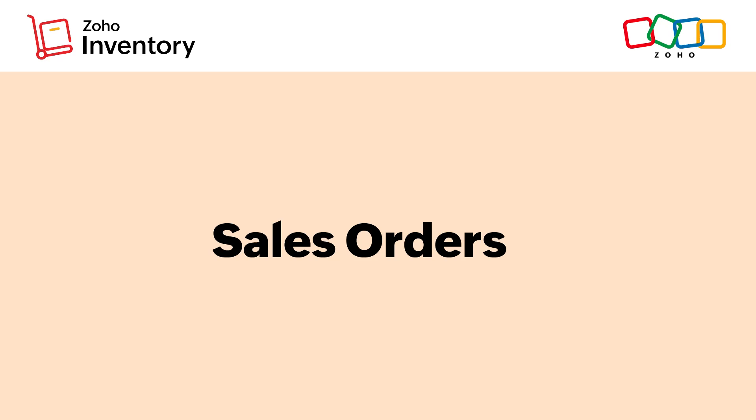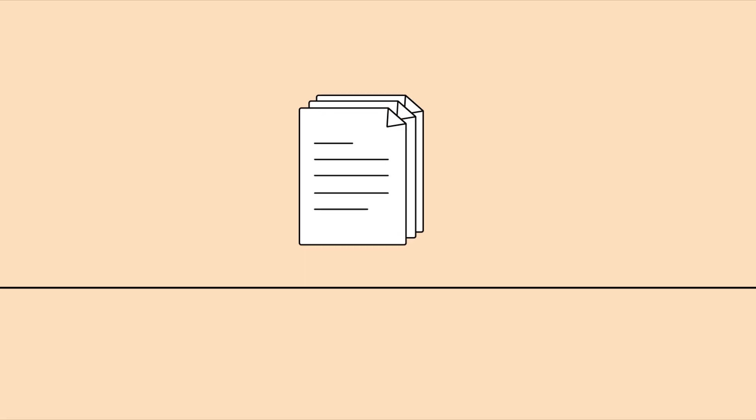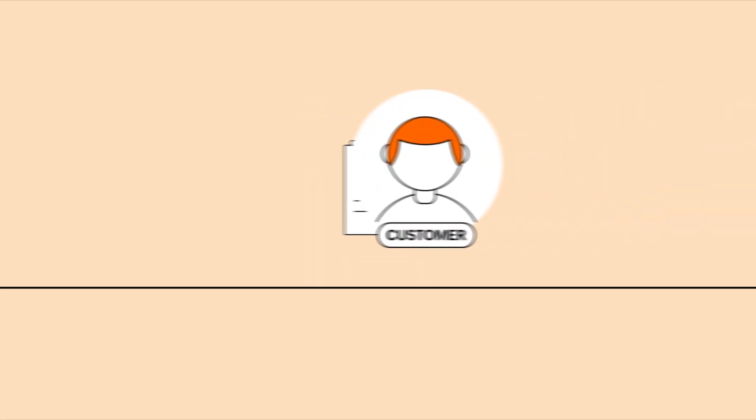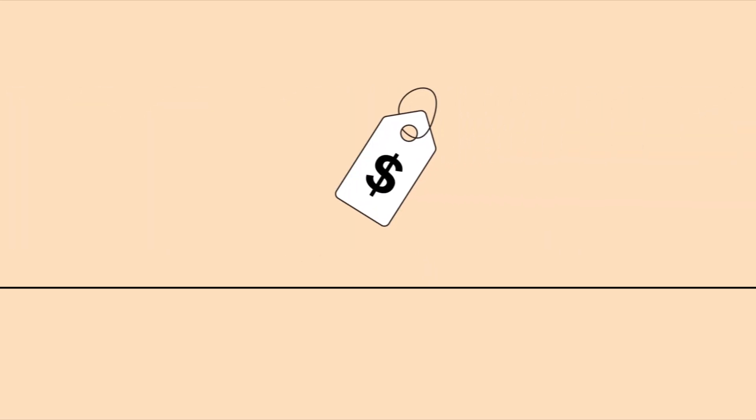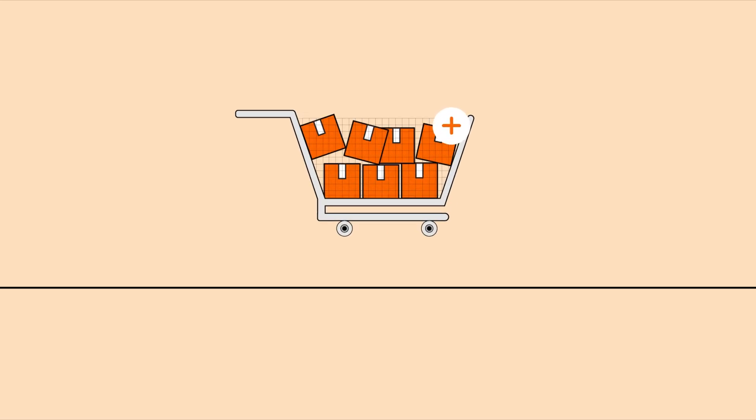Hello everybody! In this video you will learn how to create a sales order and also learn the different ways in which you can use them in Zoho Inventory. First, let us understand what a sales order is. A sales order is a document that you send to your customers to confirm the order for items that you are selling to them. It will contain details such as the price and the quantity of the items being sold.